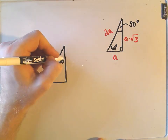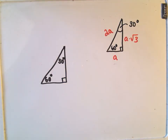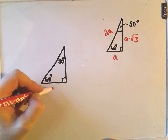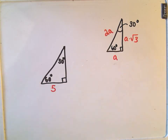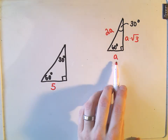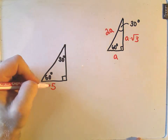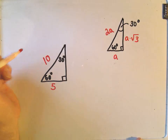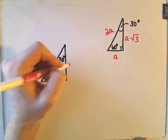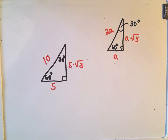Let's do an example. Suppose this is a 30-60-90 triangle and the side opposite 30 degrees has length 5 — that's probably the simplest case. To get the hypotenuse, we just double that: 2 × 5 = 10. Then to get the side opposite 60 degrees, we take that same length of 5 and multiply it by √3, giving 5√3.